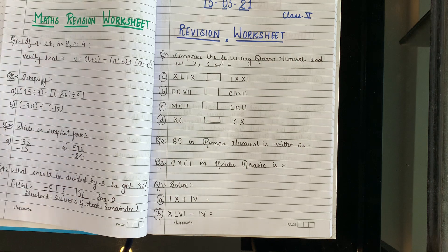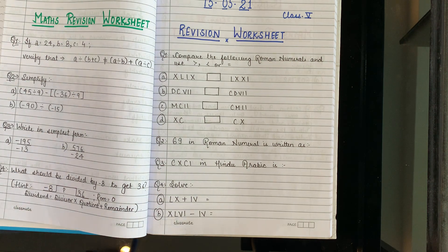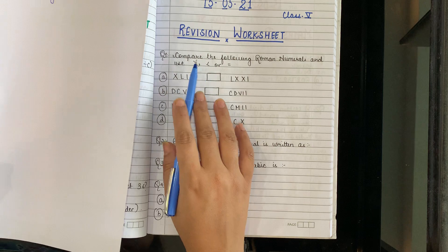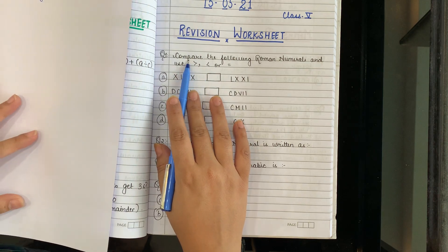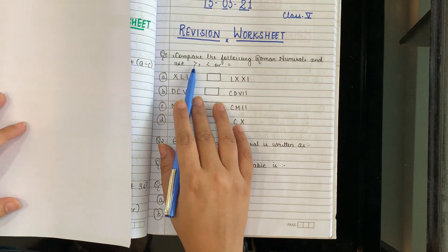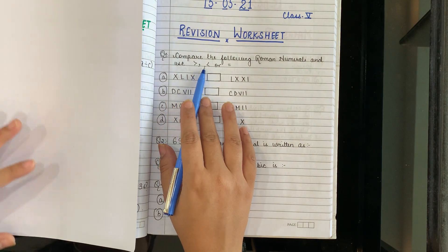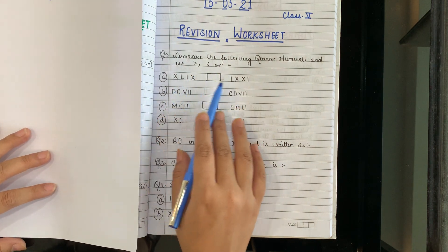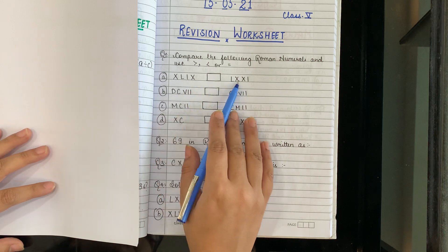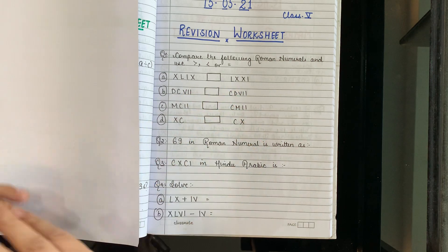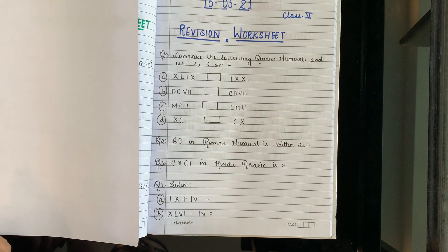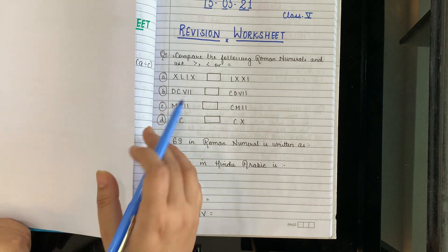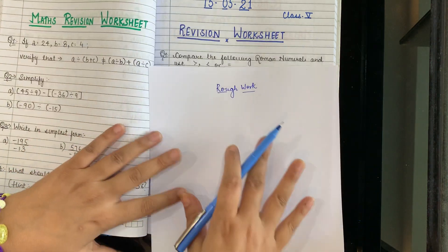So I hope everyone has written the questions. Now let us start the solution. This is a comparison question — you have to write greater than, smaller than, or equal to. In mein se kaun sa bada hai, us mein aapko greater than, smaller than ka sign lagana hai. Let us solve.